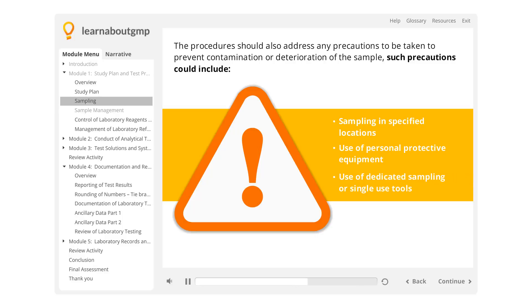And use of dedicated sampling or single-use tools. Any deviations from established sampling plans should be documented and justified, which should include an assessment on any impact the deviation may have on the validity of the sample.